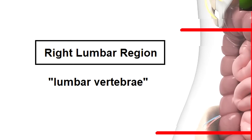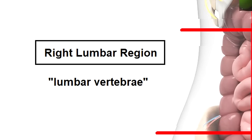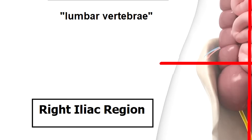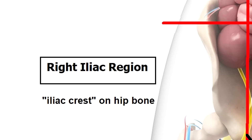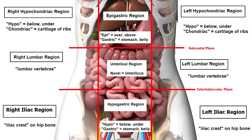Next, we have the left and right lumbar regions. The word lumbar refers to the lumbar vertebrae in your lower back, kind of between the ribs and the pelvis, and this region is nearest that side portion, so that's why they call it the lumbar region. Next, we have the left and right iliac region. The top of the hip bone has what's called the iliac crest, and that's what this region is closest to — the hip bone where that iliac crest is — so they call it the iliac region. That takes care of the left and right columns.